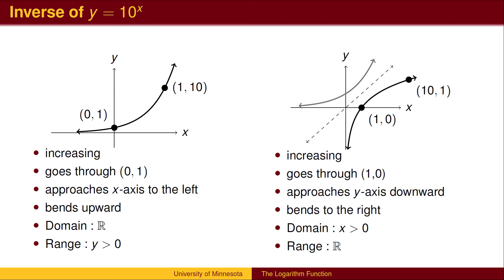We get the graph of the logarithmic function by reflecting this across the line y equals x. Each of the properties we had for the exponential function now reverses the roles of x and y.